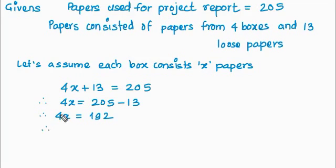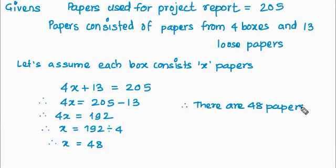And now we have to move 4 that side. 4 is multiplied here. When it goes there it becomes divided by. Therefore there are 48 papers in each box.